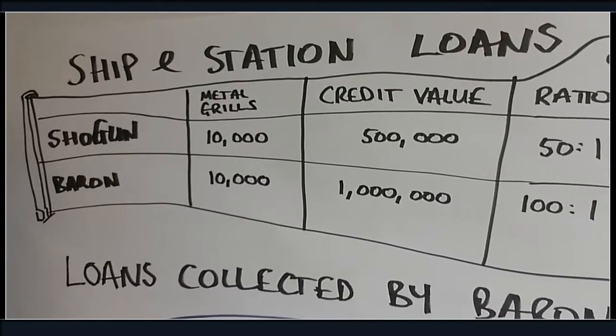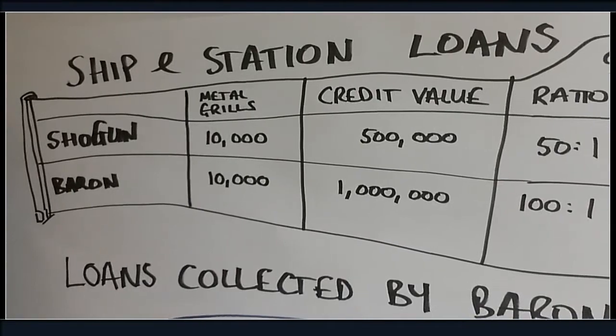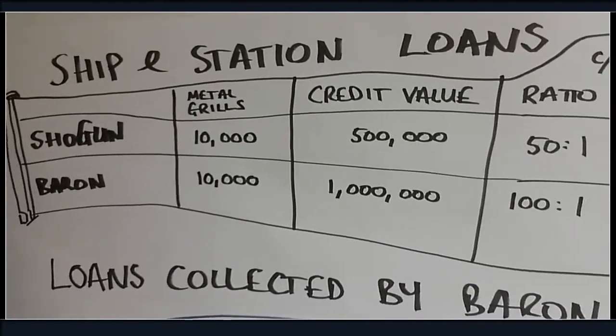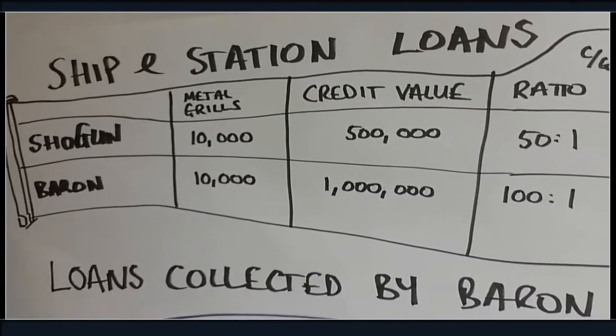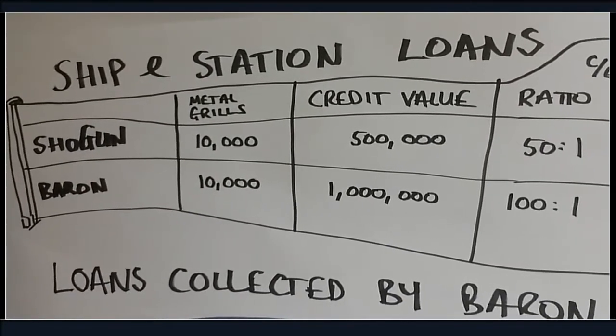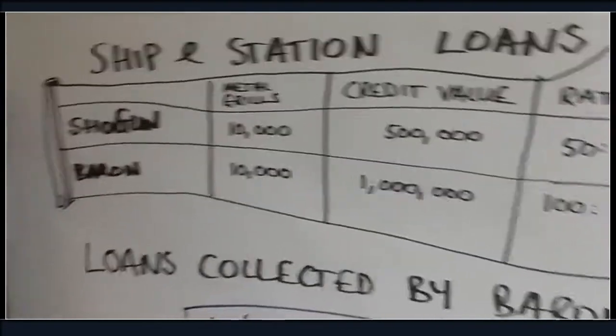So the idea is if you've got 10,000 grills and you hand them into the Shogun you get 500,000 credit value against your ship that you want to bring in. So if your ship was worth you know 10 times that you need a lot more grills. With the Barren however, the Barren only has to give half to the Shogun and so he can actually give you more. But that's not for you to know. That's for the Barrens to worry about.